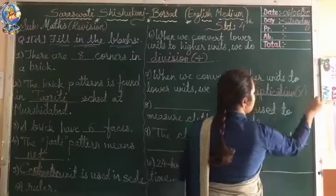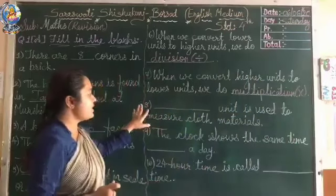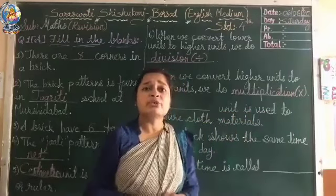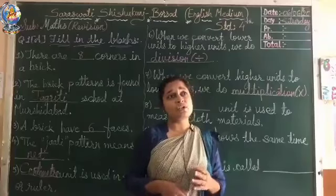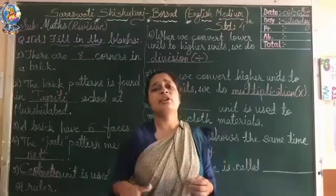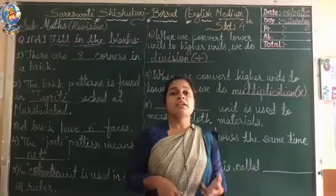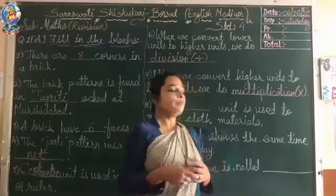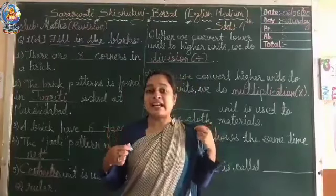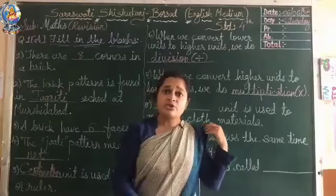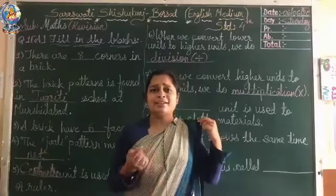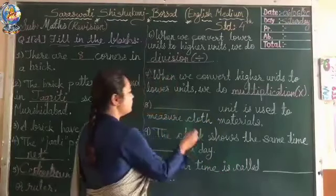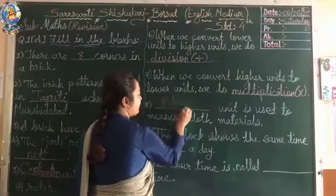Number eight: blank unit is used to measure cloth materials. About units, we have been learning from first standard. We learned which unit is used for what things. For cloth material — for example, a saree is also called a cloth material — which unit should we use? In meter. The answer is meter.